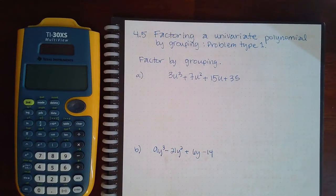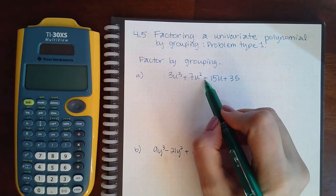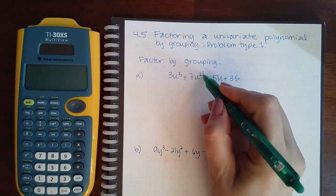Here we have factoring a univariate polynomial by grouping, problem type 1. It says factor by grouping. What this means is you essentially have to chop the problem in half, but be careful when you chop it in half. Here in the middle, this sign goes with the number that follows it, so when you cut it you have to cut it after the second term but before the third term's sign.